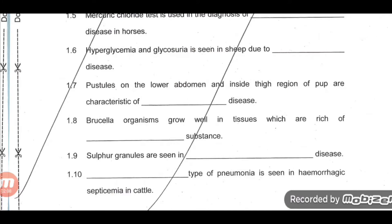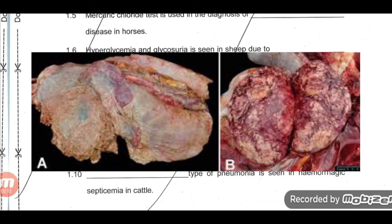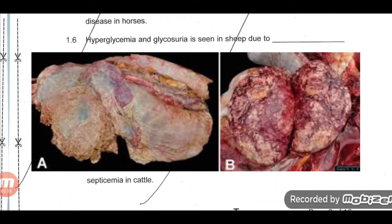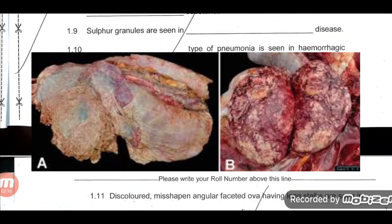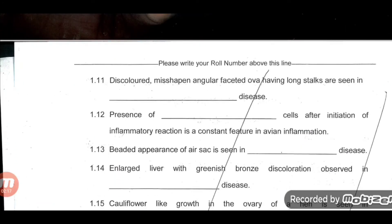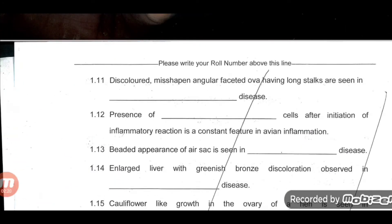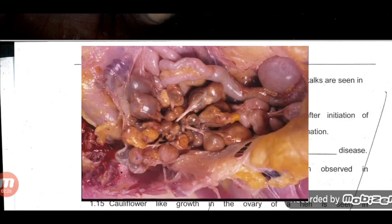Question 8: Fibrinous bronchopneumonia of the DASH type is seen in hemorrhagic septicemia in cattle. Question 9: Fibrinous bronchopneumonia. Question 10: Discoloured, misshapen, angular faceted ova having a long stalk are seen in pullorum disease.